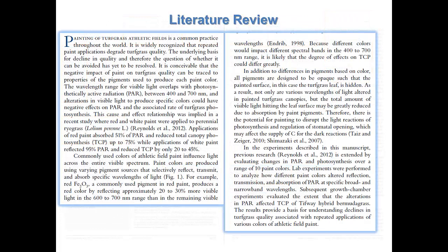The introduction, or literature review, summarizes what is already known based on previous work by other researchers, and how the authors arrived at their hypothesis under investigation. Take note of the references. This may point you to other papers you may want to read. In this example, they indicate another study was done with two paint colors, white and red, and another grass, in this case perennial ryegrass. Perennial ryegrass is a cool season species. Bermudagrass, which the authors studied, is a warm season grass. The review of literature will lead to the hypothesis developed. In this case, because different colors would impact different spectral bands, it was hypothesized that the degree of effects on total canopy photosynthesis would vary.